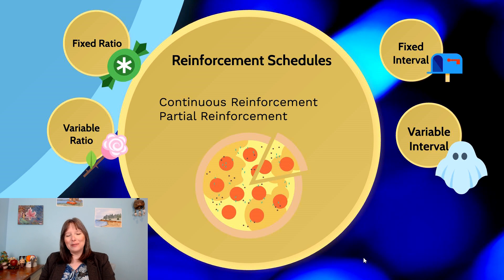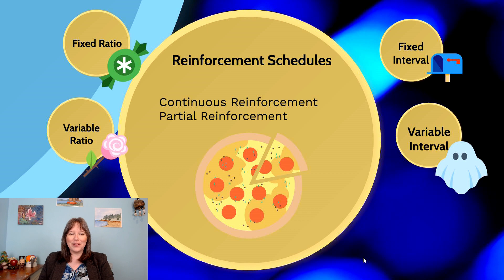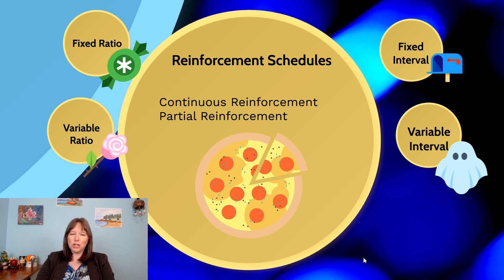The last area in operant conditioning I want to explain is the idea of reinforcement schedules. Up until now we've talked largely about continuous reinforcement schedules — like a vending machine, we expect to get rewarded every time we put our money in. However, there are a lot of things we get consequences for in everyday life that are not on continuous reinforcement schedules. You could have a partial reinforcement or partial punishment schedule and still learn and change behavior.